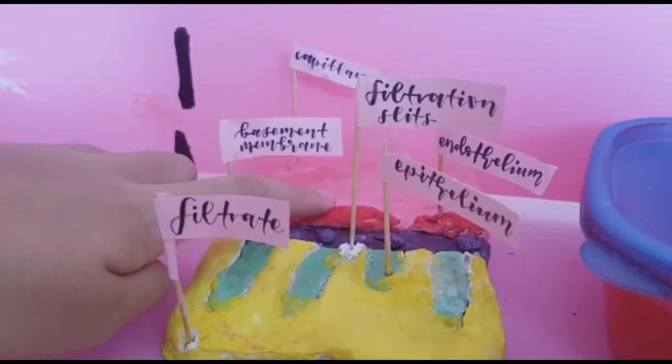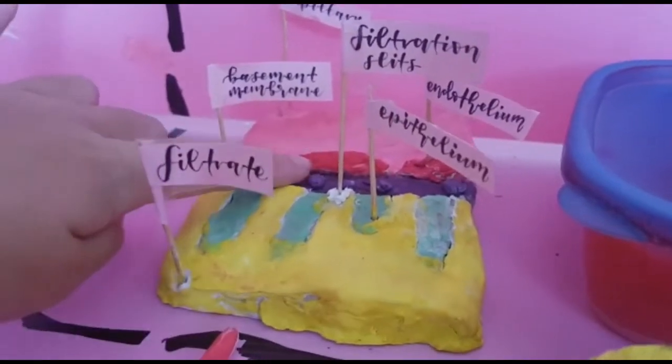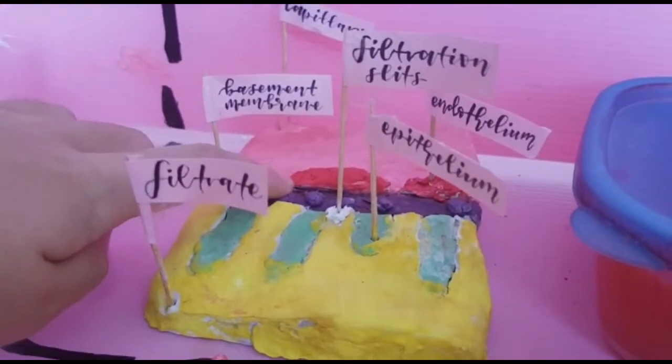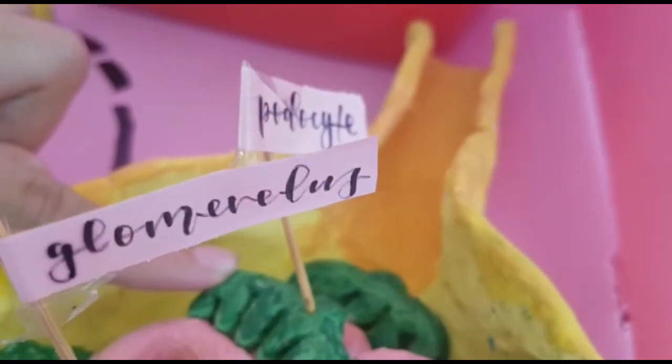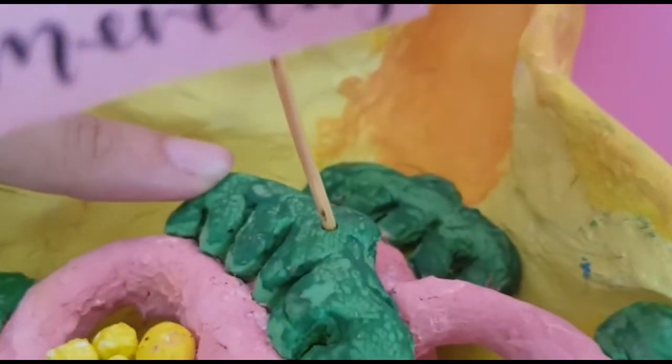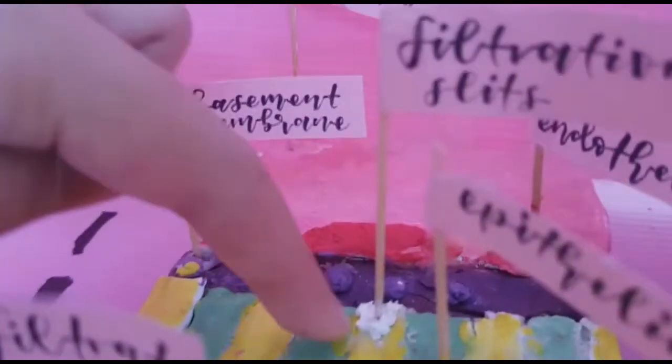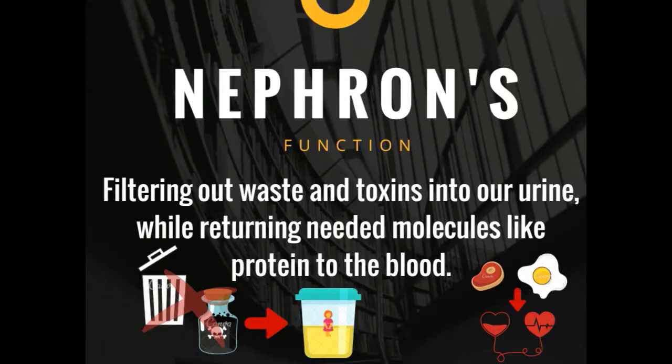The endothelium has pores that keep cells from entering the filtrate, and the basement membrane is negatively charged and repels other negatively charged molecules and proteins, such as albumin. Furthermore, the epithelium has a special cell type called a podocyte. It has foot processes that wrap around the basement membrane, leaving tiny gaps between them known as filtration slits. These adaptations allow the nephron to keep useful molecules like protein away from being filtered into the urine.